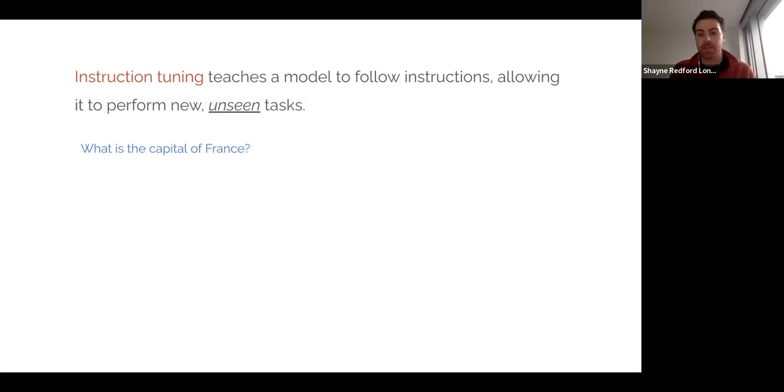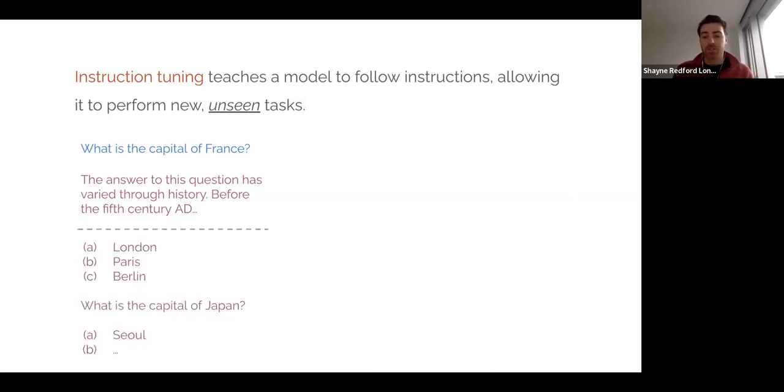So if our instruction is, answer this question, and the question is, what is the capital of France? Before instruction tuning, a model might not understand the expectation to answer the question directly and succinctly, and instead it might continue to generate plausible text, like the answer to this question has varied through history before the 5th century AD, or it might just choose to develop a quiz, like A, London, B, Paris, C, Berlin, and without answering, keep developing new questions and plausible multiple-choice answers. But really what we want is the model to understand the expectation of the user to give a direct, simple answer, like the capital of France is Paris.